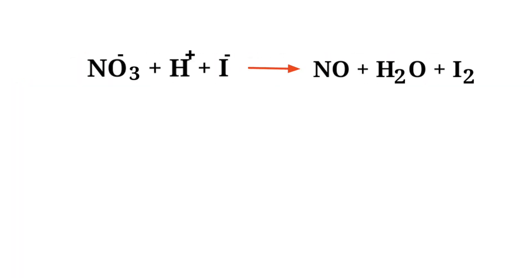First, figure out the reducing and oxidizing agents by the rules of assigning oxidation numbers. In the ion electron method, one reaction is divided into two half reactions, which are then balanced and added together.